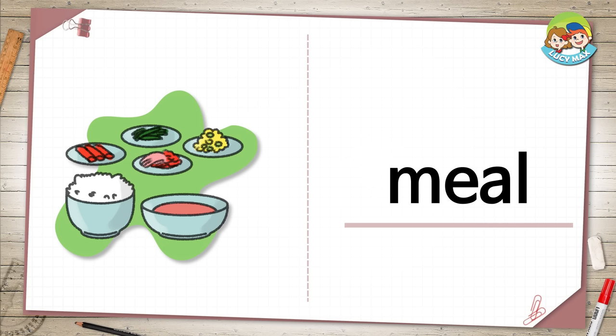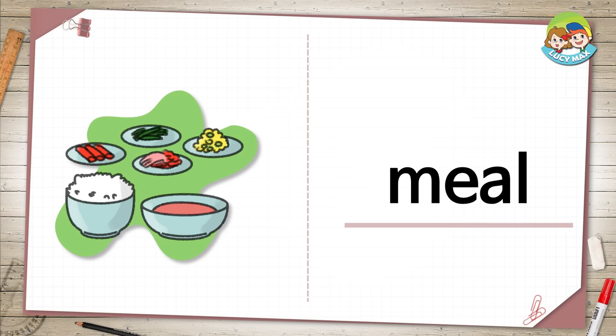Meal. When you eat food, like in the picture, you are having a meal. It's food you eat. You usually eat three meals a day: breakfast, lunch, and dinner. What's your favorite meal?